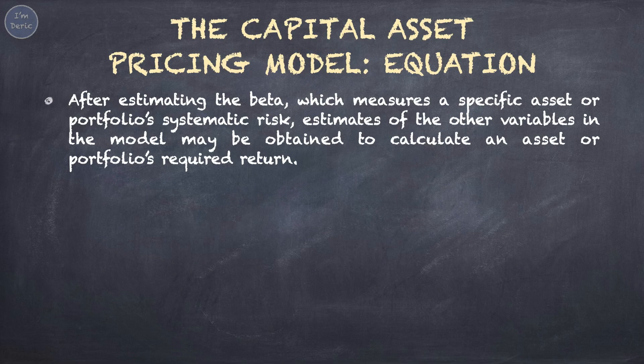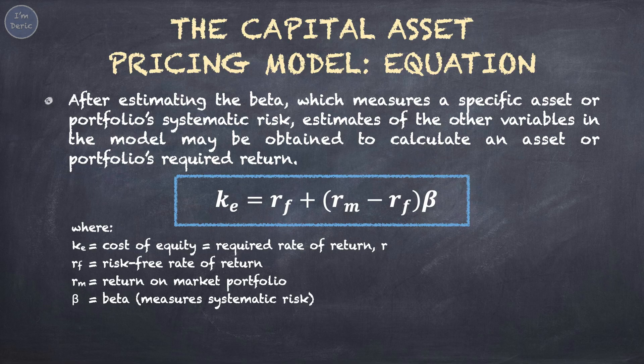After estimating the beta, which measures a specific asset or portfolio's systematic risk, estimates of the other variables in the model may be obtained to calculate an asset or portfolio's required return. This is what we call the Capital Asset Pricing Model, CAPM. According to the formula, required return equals the risk-free rate plus the quantity of market return minus risk-free rate, multiplied by beta.